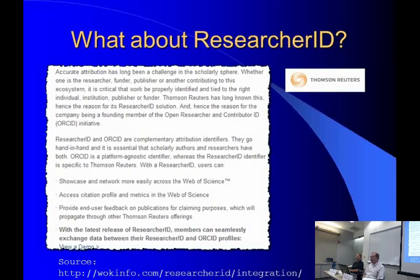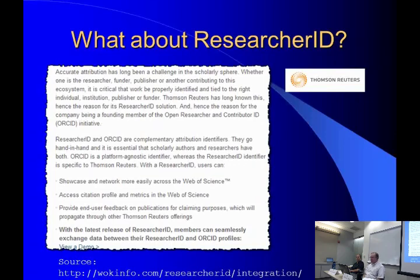Researcher ID has been in place about the time Web of Science went from paper to online. It's another researcher identifier, but specific to the Thomson Reuters products — most prominently the Web of Science, which includes the Science Citation Index, the Social Citation Index, the Arts and Humanities Index, the Book Citation Index, and now a Data Citation Index. You might consider signing up for both.